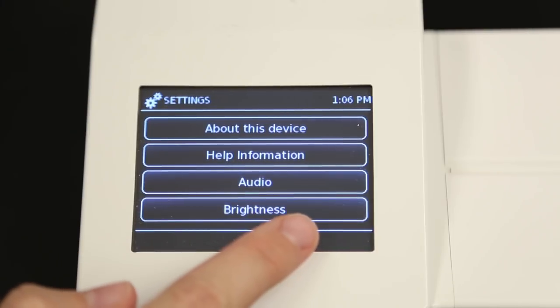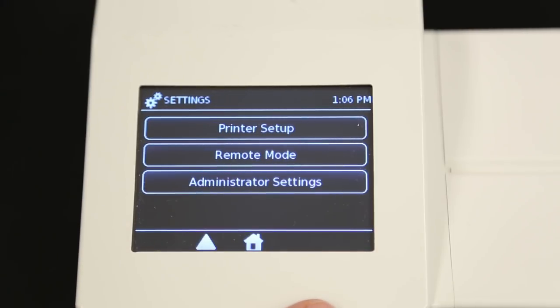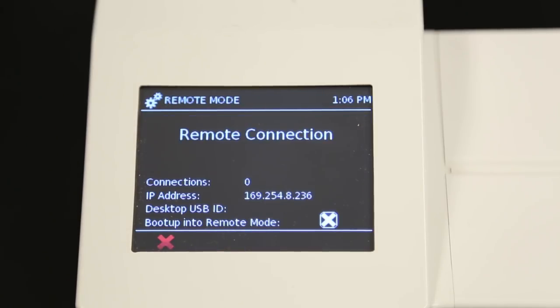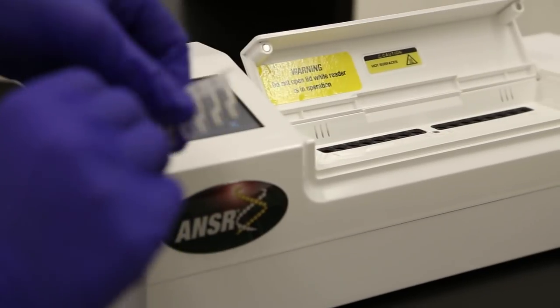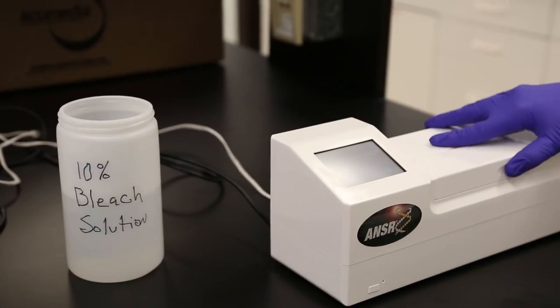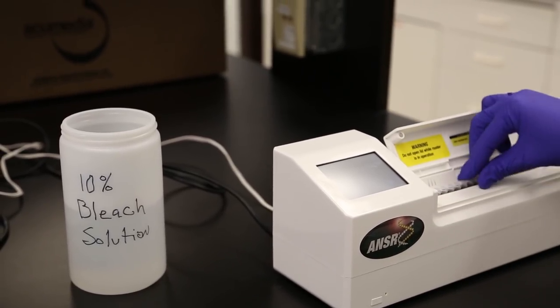Then press the down arrow once at the bottom of the screen. From here, select Remote Mode, which is the second box down. The screen will say Remote Connection. Note, the reader's lid should remain closed except for placing reaction tubes in or taking them out of the reader.